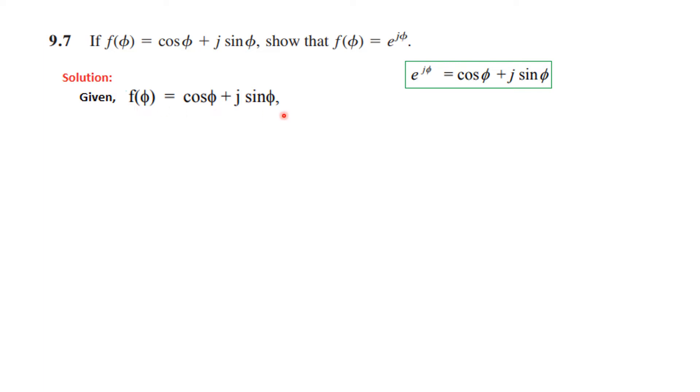This is given from here. The first step we will do is differentiate both sides with respect to φ. So df(φ)/dφ, and differentiation of cos φ gives minus sin φ, and j sin φ gives j cos φ.